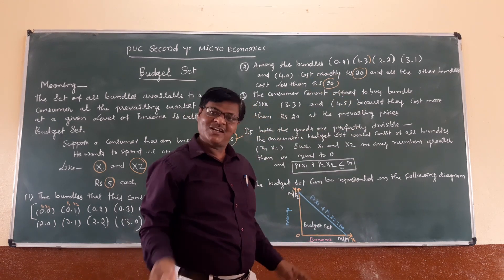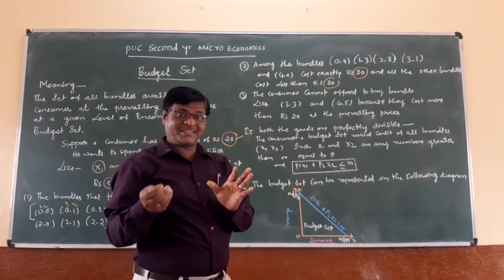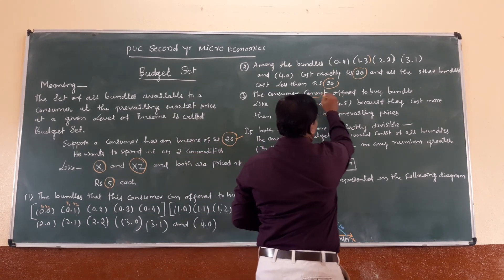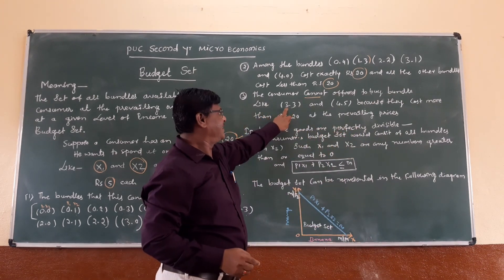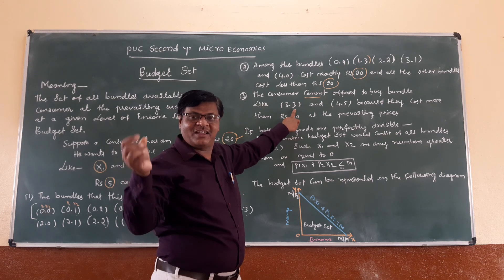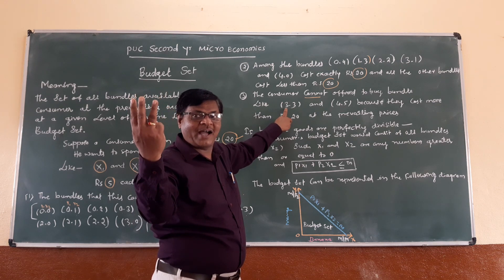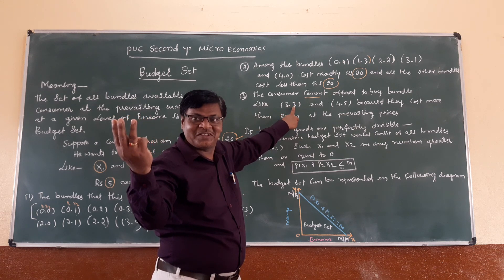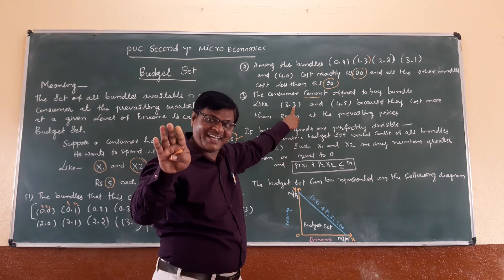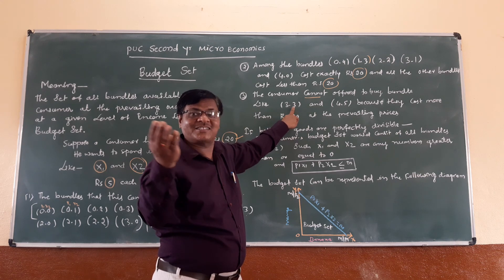But the consumer cannot afford to buy certain bundles. For example, 3 X1 and 3 X2 — he has no sufficient income. He has only RS20. The cost is: 5 times 3 equals RS15 for X1, plus 5 times 3 equals RS15 for X2, so RS15 plus RS15 equals RS30. But his income is only RS20, so he cannot buy this bundle because the price of these goods is more than his income.